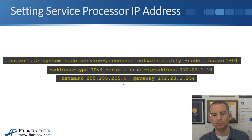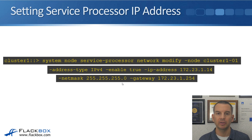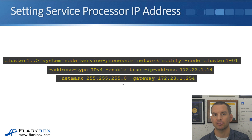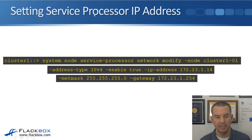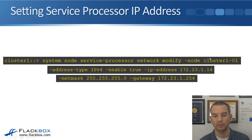If you use the GUI guided setup tool for initial system setup, you will set the IP address for the service processor as you go through the wizard. If you're using the command line cluster setup wizard, however, that is not going to be done — it's a post-installation task. The command to configure the IP address on your service processor is: system node service-processor network modify, then dash-node, then the node name, such as cluster1-1. You need to do this for each node.